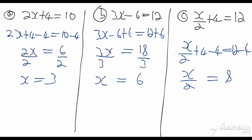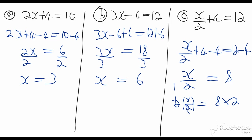Now I have x over two — that's half of x — but I want one x. Whenever we have a half and want a whole, we multiply by two. So the opposite of dividing by two is to multiply both sides by two: x over two times two equals eight times two. Two into two is one, so we end up with x equals sixteen.